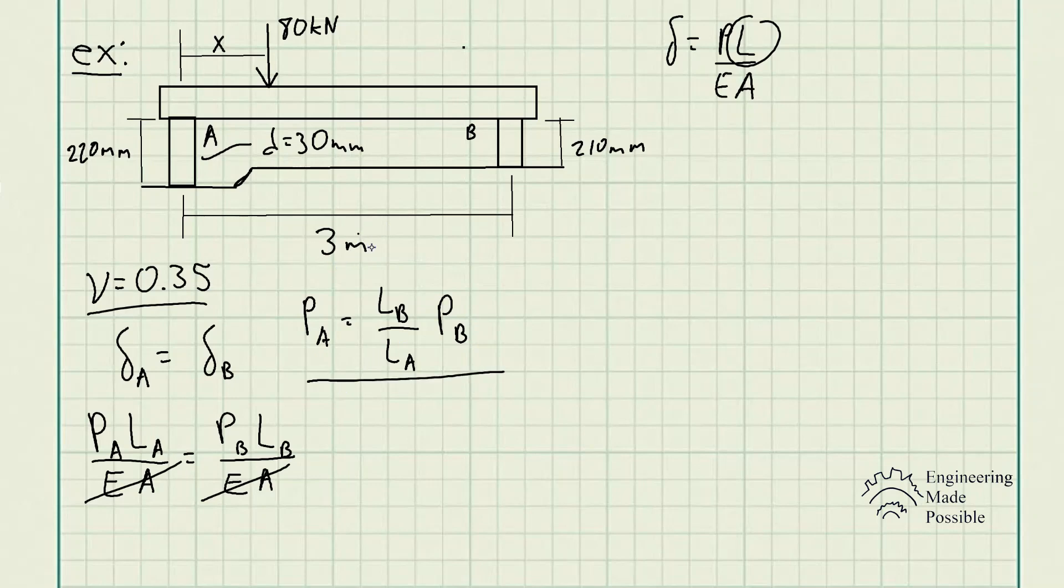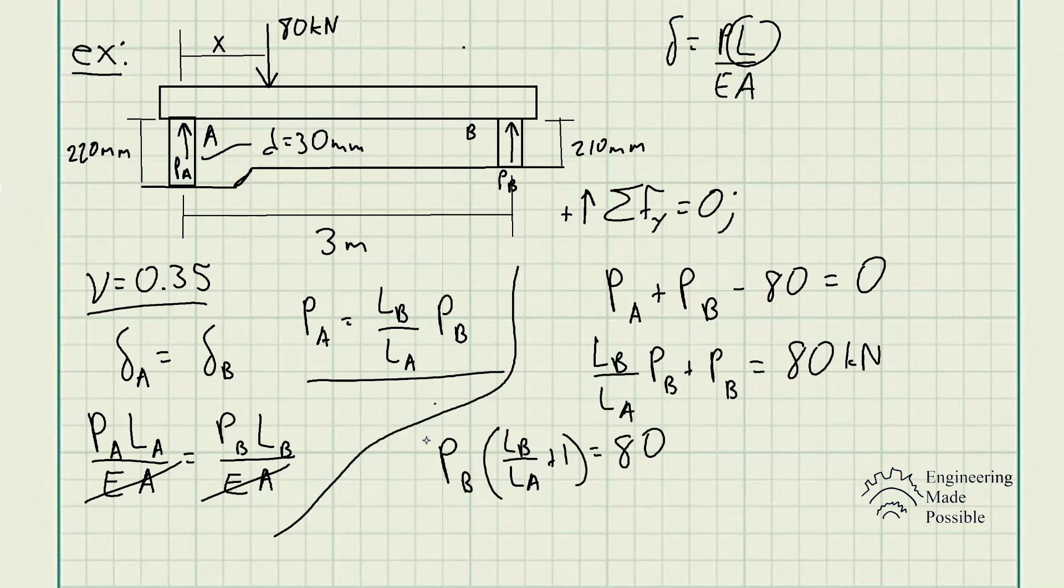Now we do the static equilibrium, the summation of forces with respect to the y-axis. We have PA plus PB, both in the positive direction going upwards, and 80 kilonewtons downwards. This equals zero. Once we factor out PB, we get LB over LA plus 1 equals 80. Divide both sides to solve for PB and we get 40.73 kilonewtons.